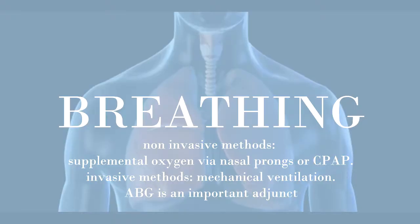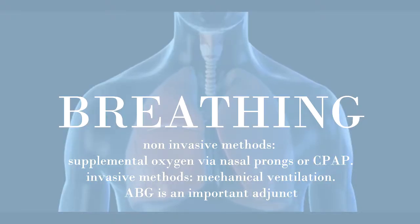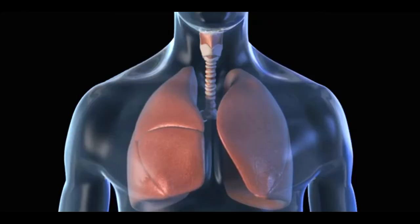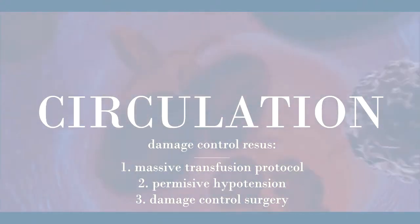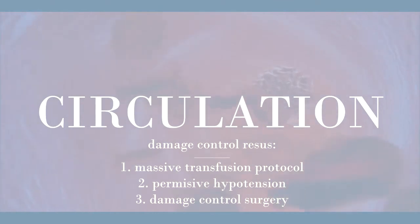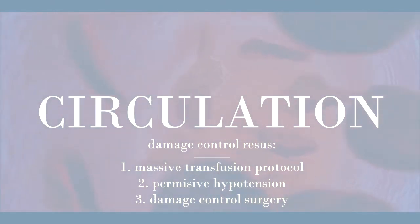B is for breathing: is there adequate air going in? Does the patient need more oxygen? C is for circulation: is the patient adequately perfused? Check for blood on the floor, and formally check the chest, abdomen, pelvis, and long bones.